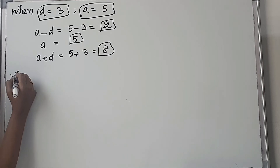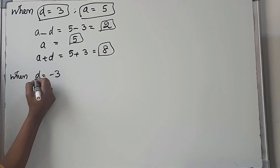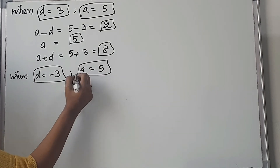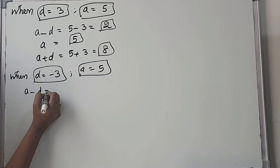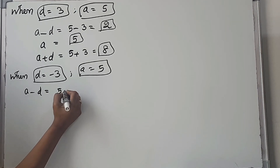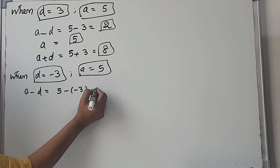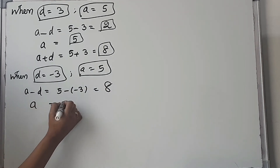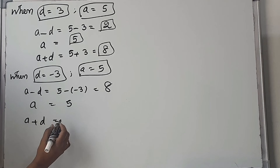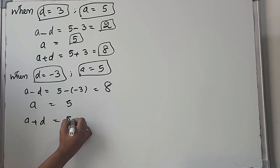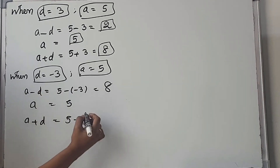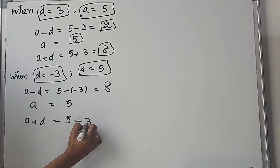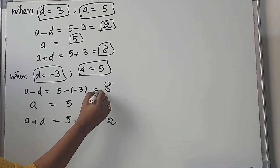For the second case, D equals minus 3, and A equals 5. Then A minus D is 5 minus of minus 3, which is 5 plus 3 equals 8. And A plus D is 5 plus minus 3, which is 5 minus 3 equals 2. So the three numbers are 8, 5, 2.